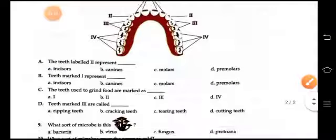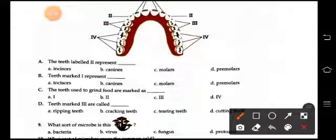Now the teeth labeled number 2 represents canine. Teeth mark 1 represent incisors. So let's do it ourselves.